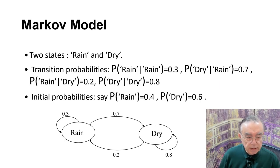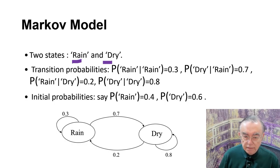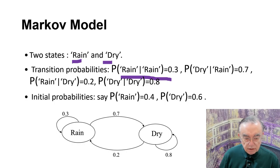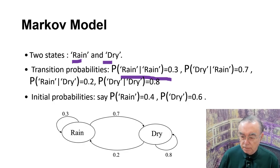Let's suppose we are studying the weather. At the crude level, we want to classify the weather as raining or dry. Based on observation or theory, we might have some probabilities: if it's raining one day, it might rain the following day with some probability. If it's dry, there's a transition probability array. Each of these states has probabilities of remaining the same or transitioning. So we have a little world defined by two concepts — rain and dry — and probabilities of transition.